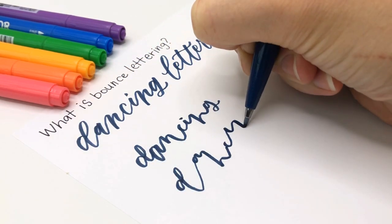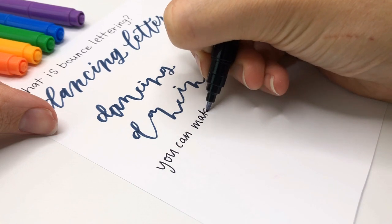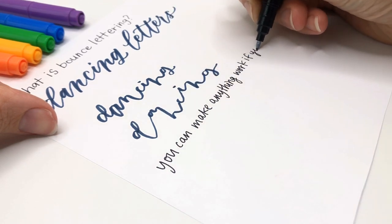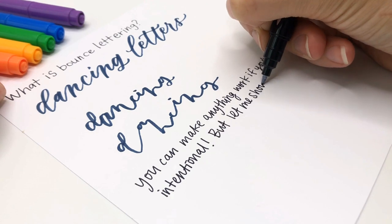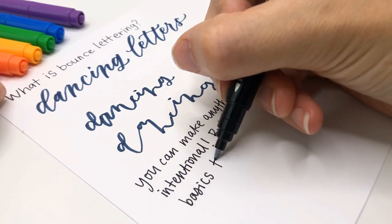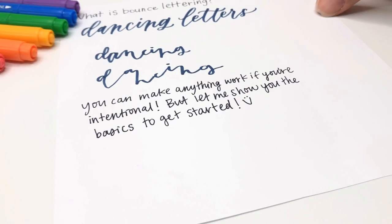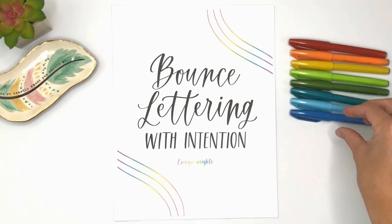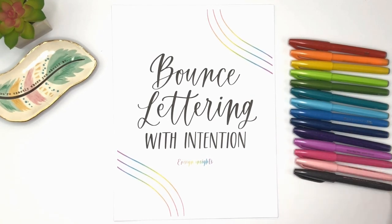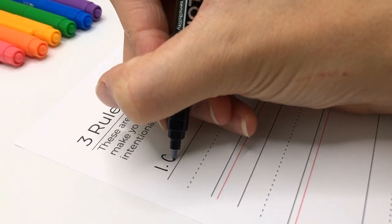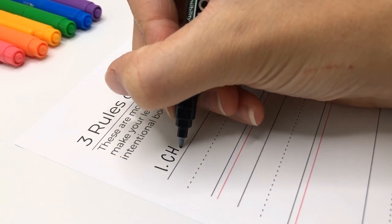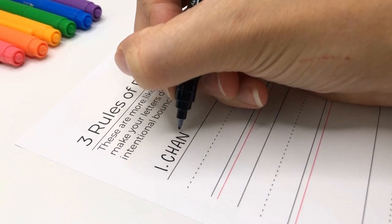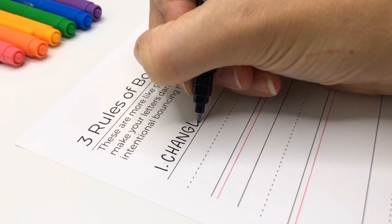But wait, rules? Didn't you just say we're breaking the rules? Yes. Bounce lettering is the ultimate breaking the rules style because you basically get to do what you want. Everyone's bounce lettering is going to look a little different. So to help you get started, here are the three rules of bounce lettering. I'll admit they're probably more like guides. Either way, they'll help you while you learn so you can have intentional bouncing instead of messy bouncing.